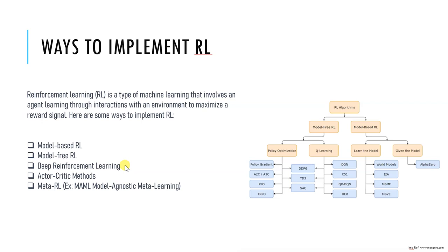Other types of deep reinforcement learning include Deep Deterministic Policy Gradient and Trust Region Policy Optimization. These are different types of deep reinforcement learning algorithms we will be exploring.